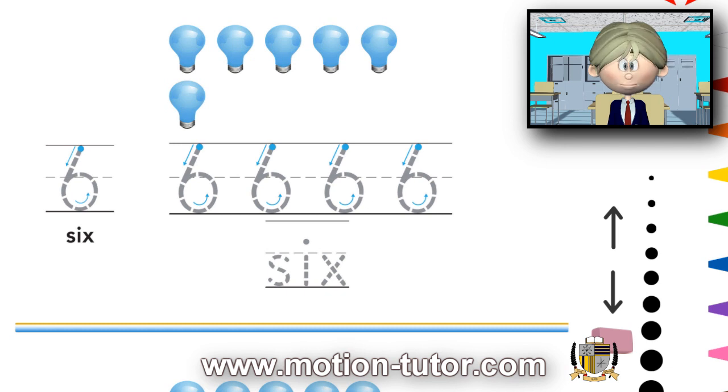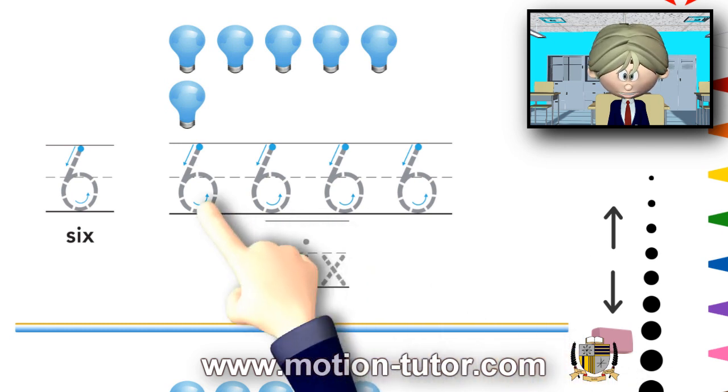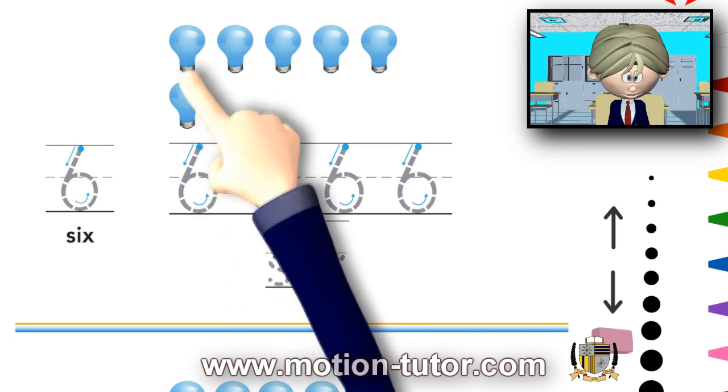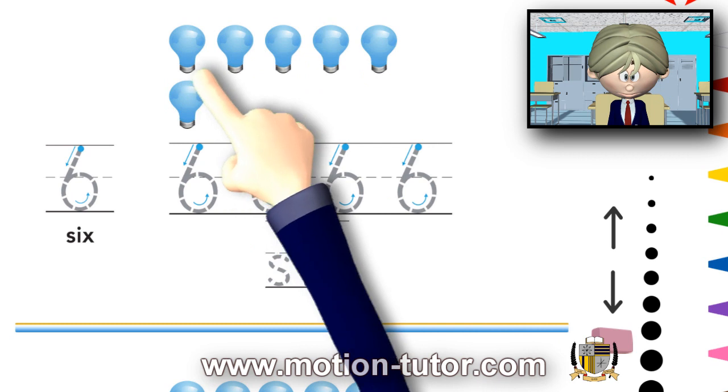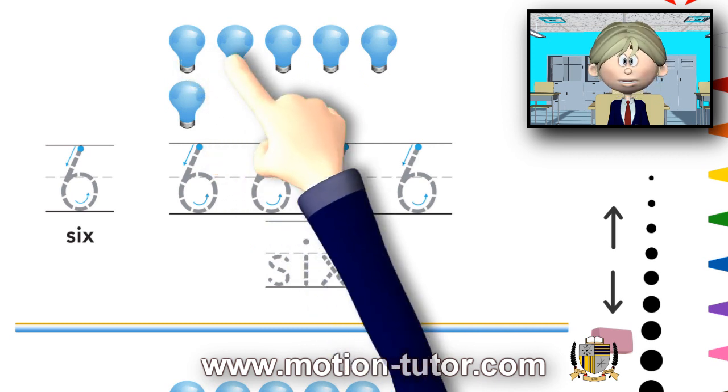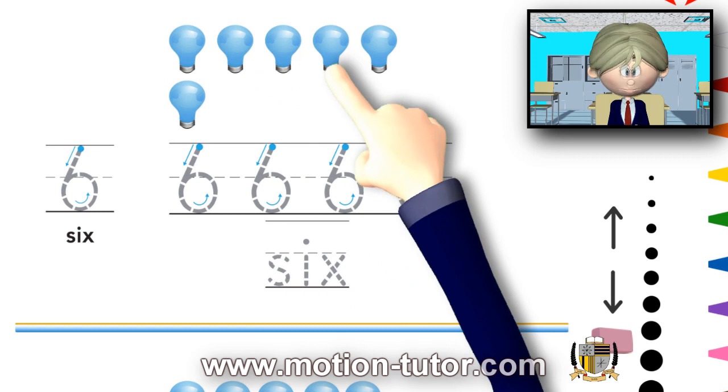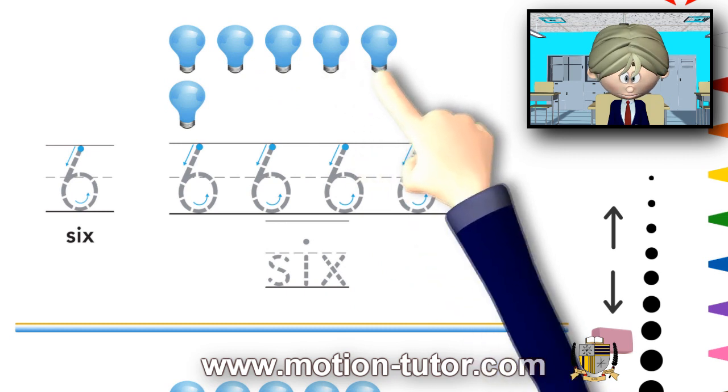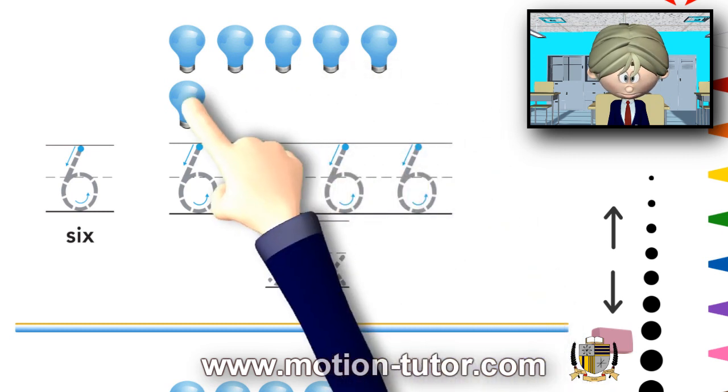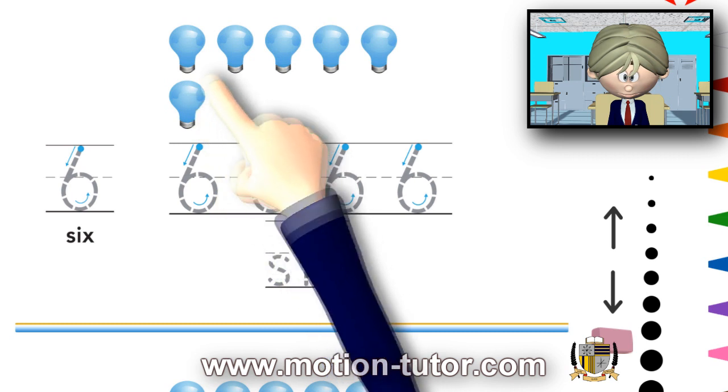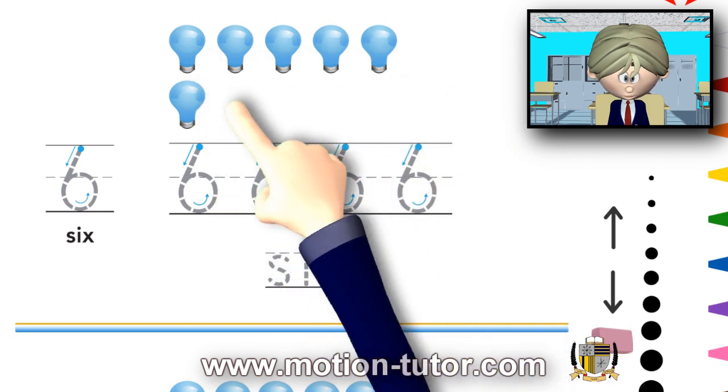Let's get started. First, let's look at the number 6. Up here, we have 6 lightbulbs. Let's count. 1, 2, 3, 4, 5, and 6. So, we have 6 lightbulbs.